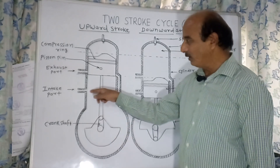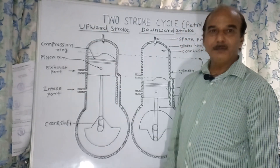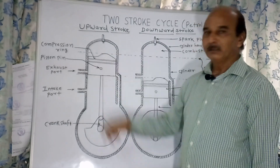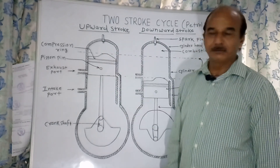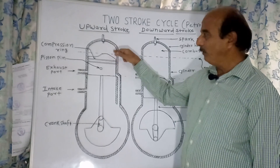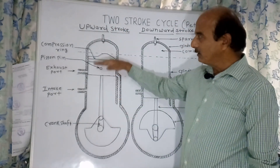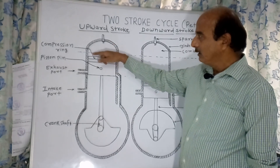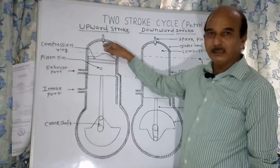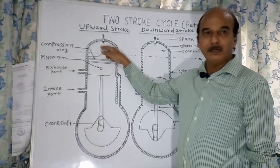Due to the vacuum, through the intake port, from the carburetor, the air-fuel mixture is drawn into the crankcase. Above the piston, the previously entered air-fuel mixture is compressed in the combustion chamber. When the piston reaches near the TDC, the spark plug gives a spark in the combustion chamber and the air-fuel mixture burns.